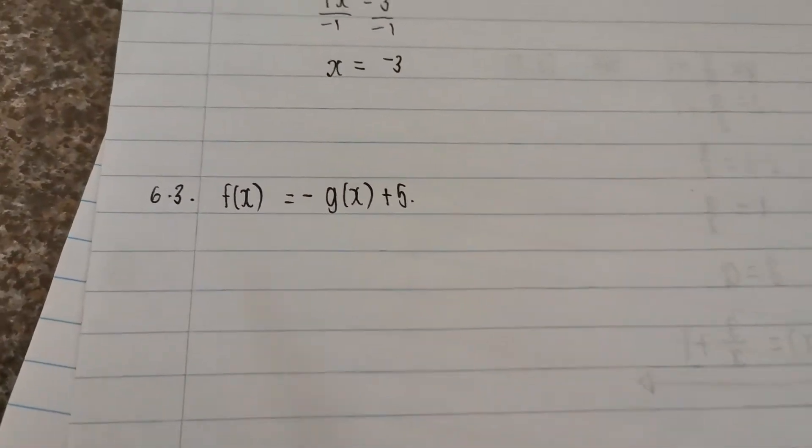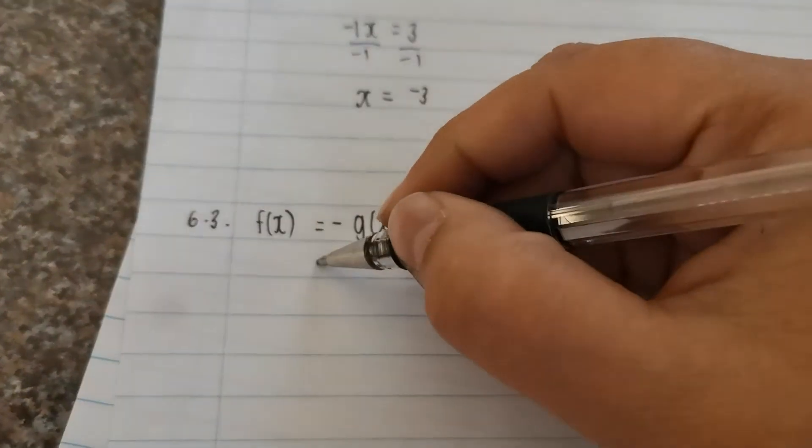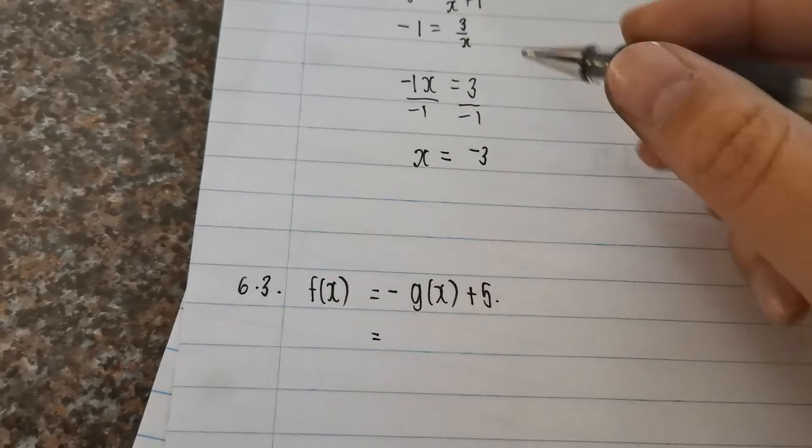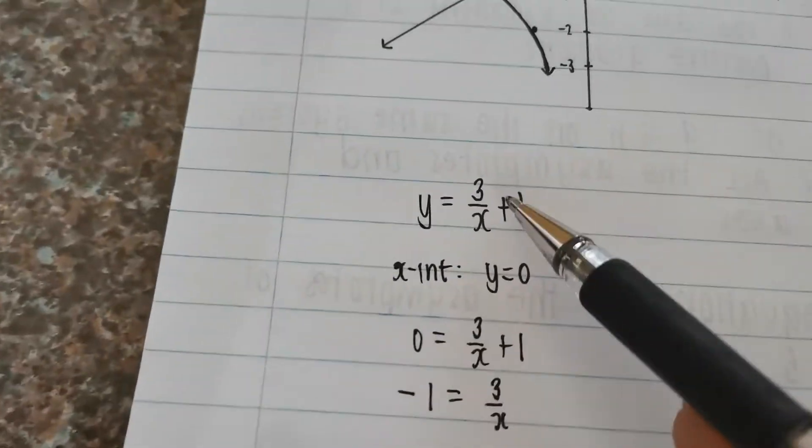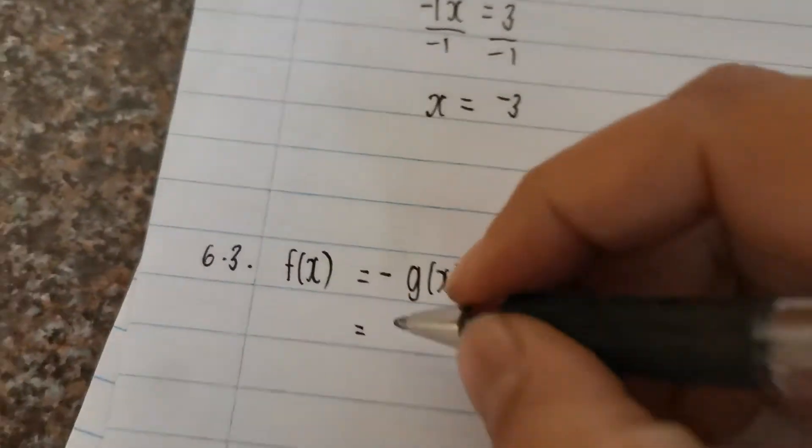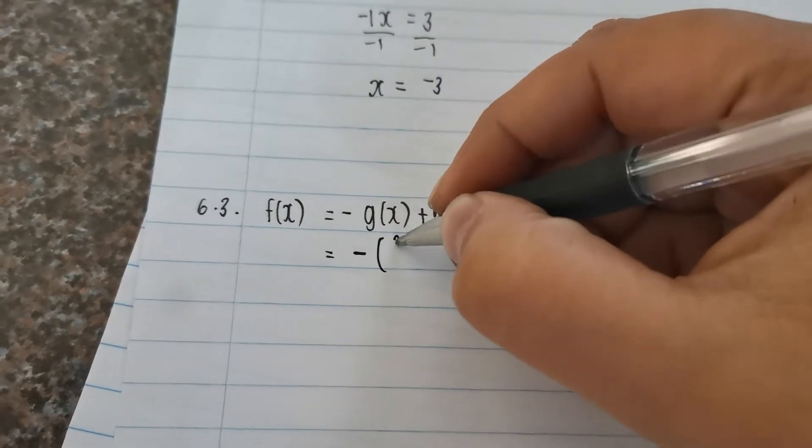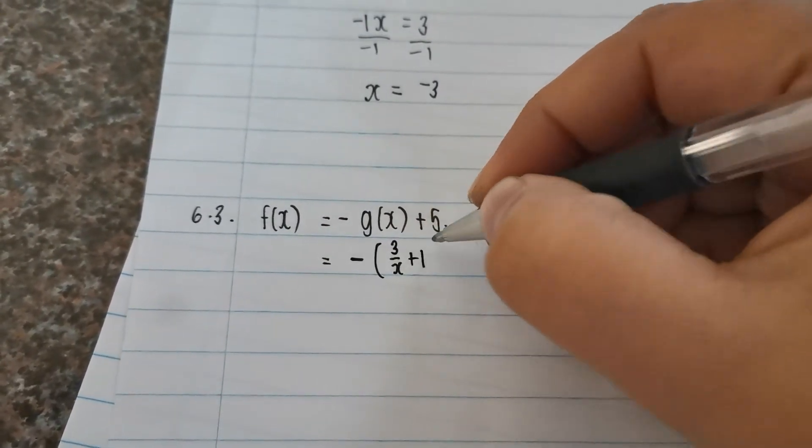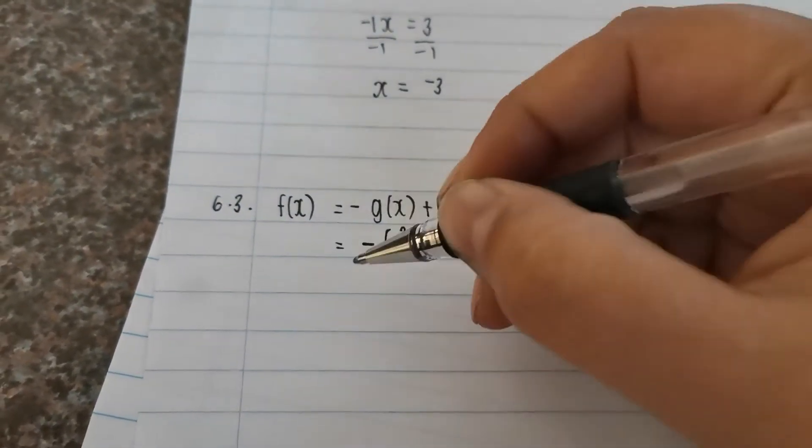So let's first determine what the equation is so that we can determine what the asymptotes are. I wrote it down for us. The equation of g of x was 3 over x plus 1, so it's negative times 3 over x plus 1 plus 5. Let's just figure this out,